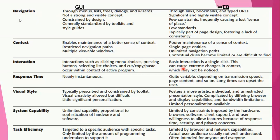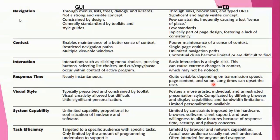In GUI, basic interaction consists of clicking menu choices, pressing buttons, selecting list choices, and cut/copy/paste — all occurring within the context of the active program. Response time may be nearly instantaneous. In web interface, response time can be quite variable depending on transmission speeds, page content, and so on — long load times can upset the user.